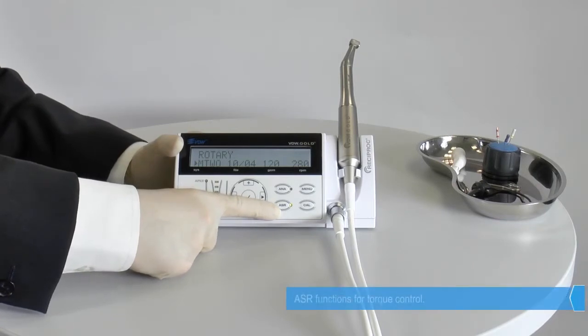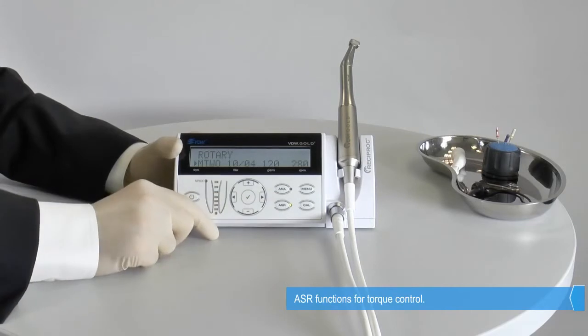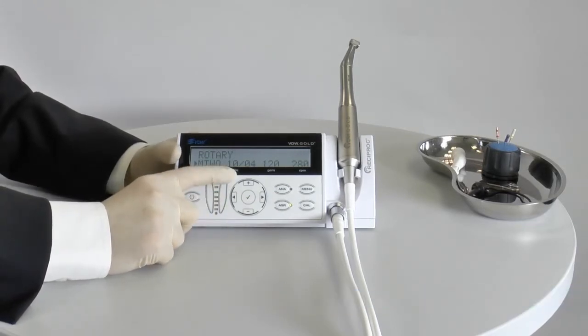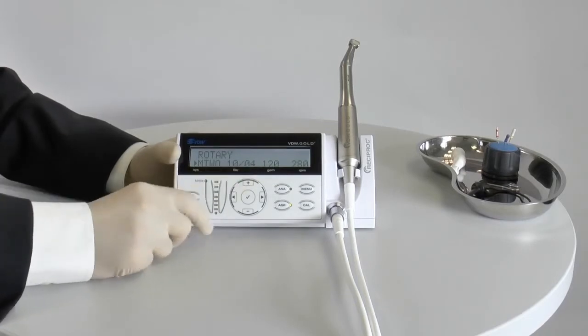Pressing the ASR key controls the autostop reverse function. When the ASR key lights green, the torque level for each file size is monitored.